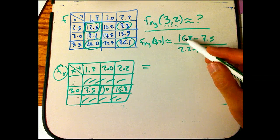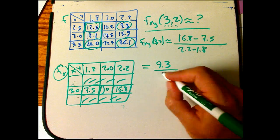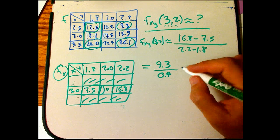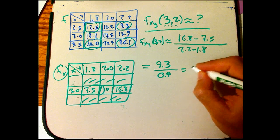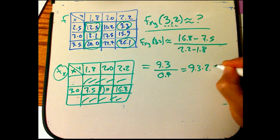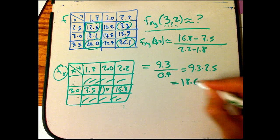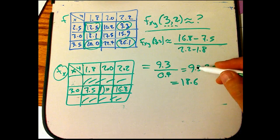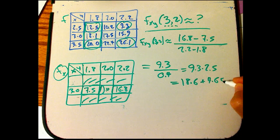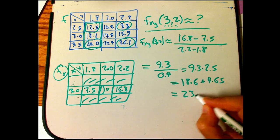So that's 9.3 over 0.4. And then, let's see, that's really 9.3 multiplying by 0.4 is multiplying by 2.5. That's 18.6. I could do this with a calculator, but it's more fun to do it by hand. And half of 9.3 is 4.65. And so that's 23.25.